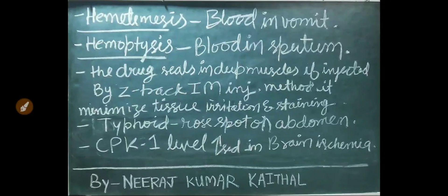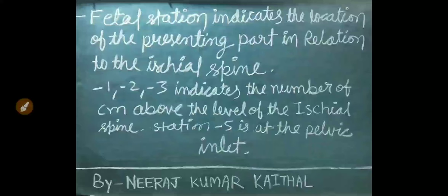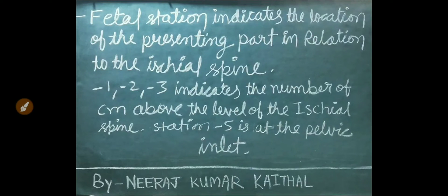In typhoid disease, rose spots are present on the patient's abdomen. CPK-1 level increases in brain ischemia. Fetal station indicates the location of the presenting part in relation to the ischial spine. Minus 1, minus 2, minus 3 indicates the number of centimeters above the level of the ischial spine.